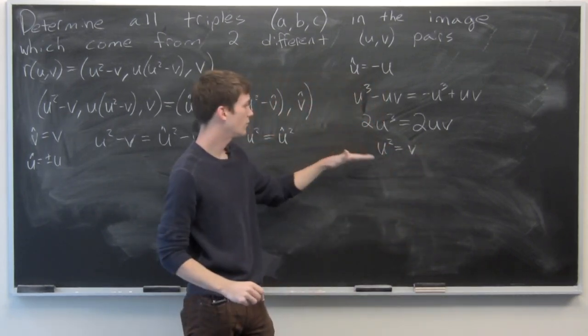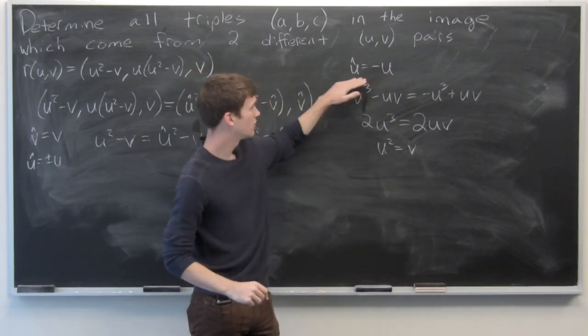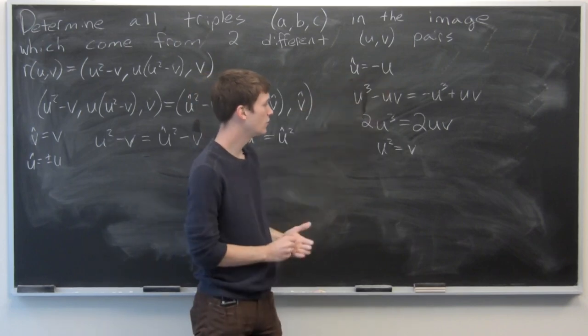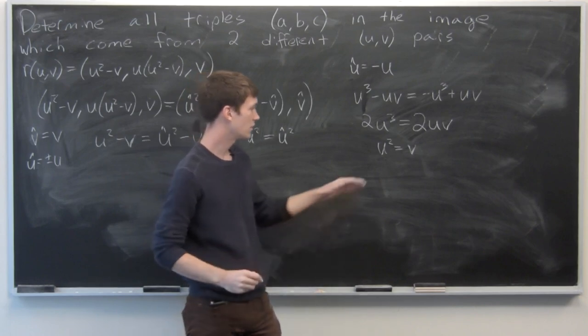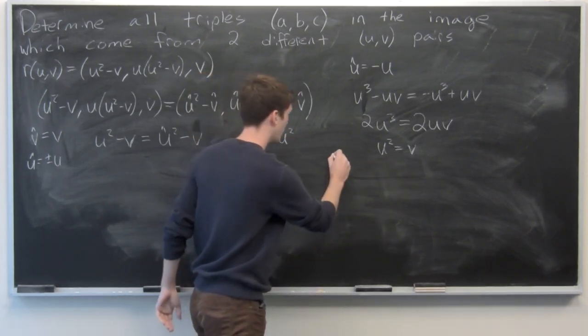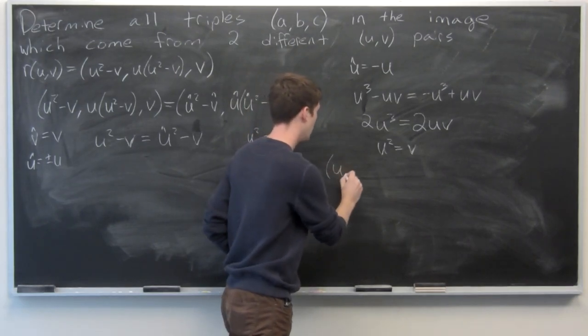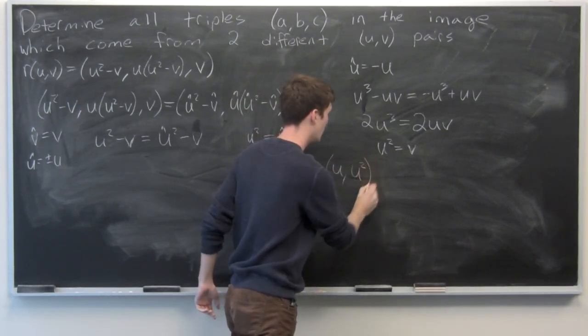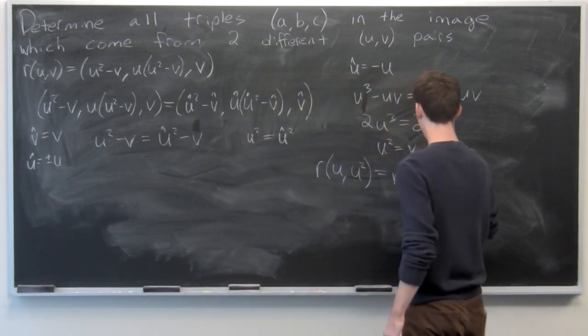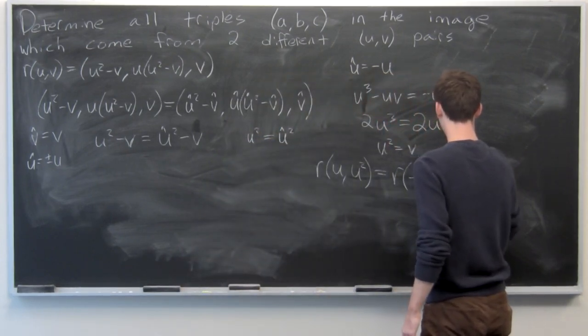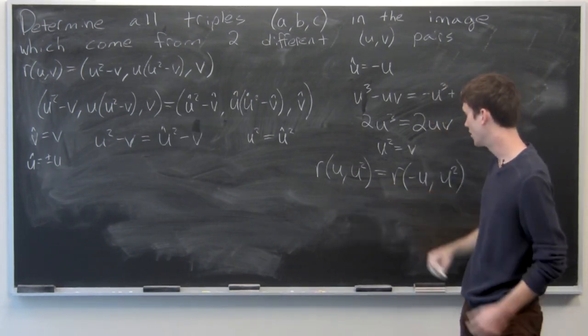So now we know that u-hat is equal to negative u, and v is equal to u-squared. So our pairs are going to be of the form u, u-squared is going to be equal to r of negative u, u-squared.